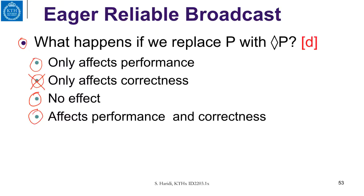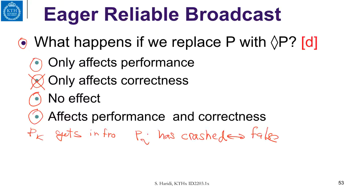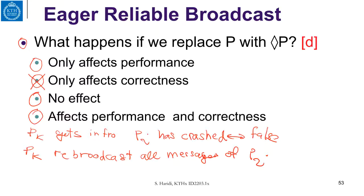Now we want to understand what happens to performance. What can happen is that a process can get a false notification of the crash of another process. So PK gets information that PI has crashed, but this is false. What does it do? PK rebroadcasts all messages of PI.